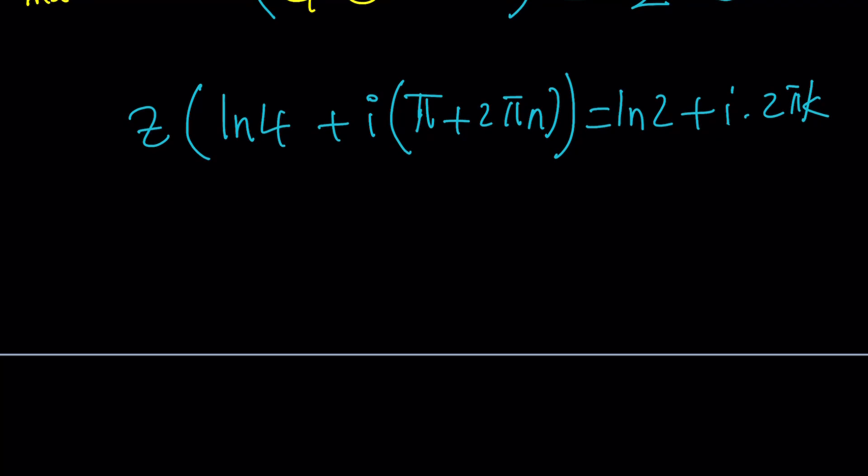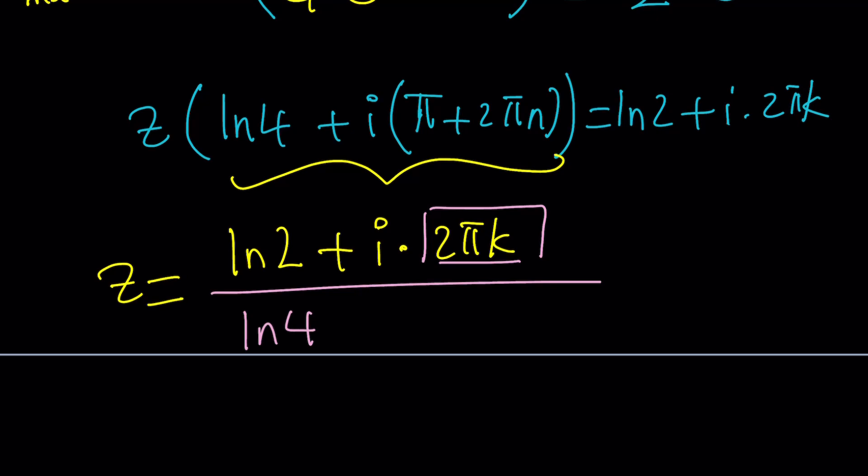Let's take natural log both sides. That's going to give us z times the ln of a product. That's going to be ln 4 plus ln e to the power something. In other words, we are turning this product into a sum because that's what the log does. And on the right hand side, we're going to get ln 2 plus i times 2 pi k. Same idea, but simpler.